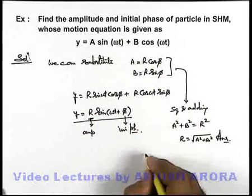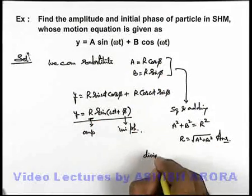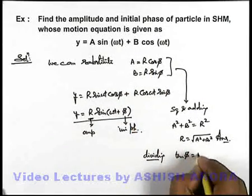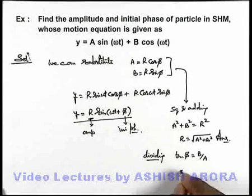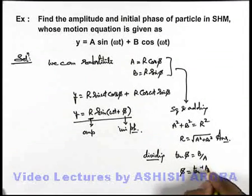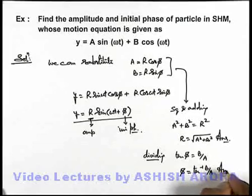Here, if we divide these equations, dividing we get tan φ = B/A. So initial phase of this SHM can be written as tan⁻¹(B/A), which is the another answer of this problem.